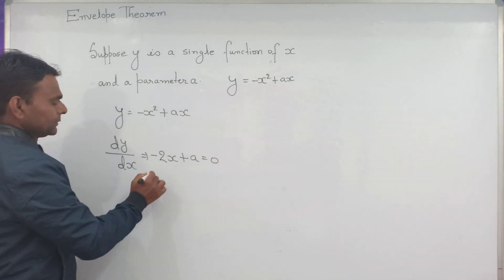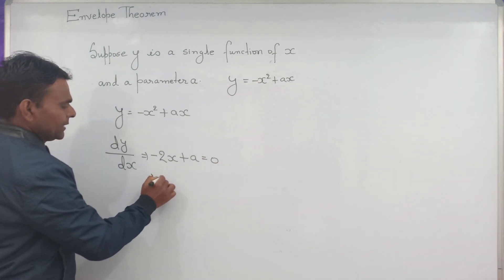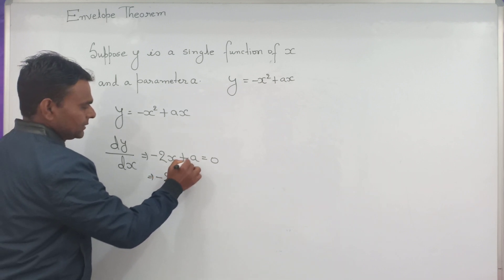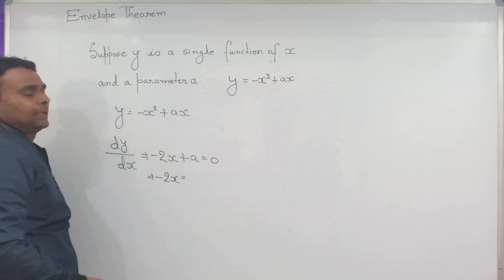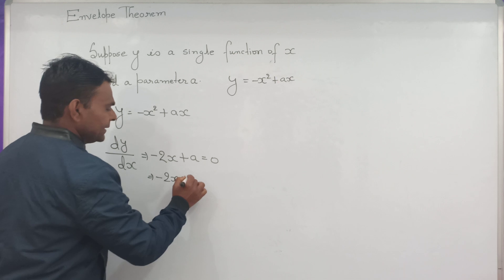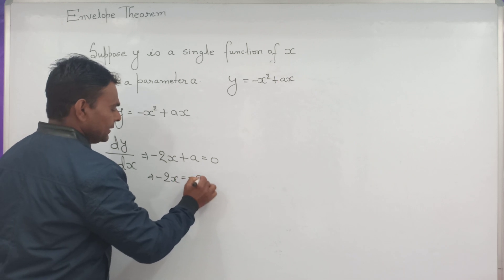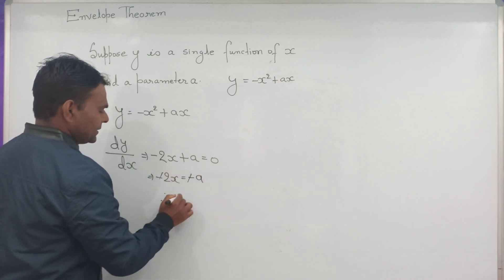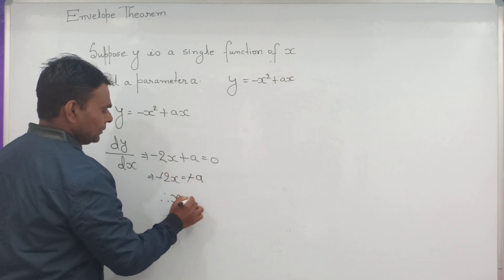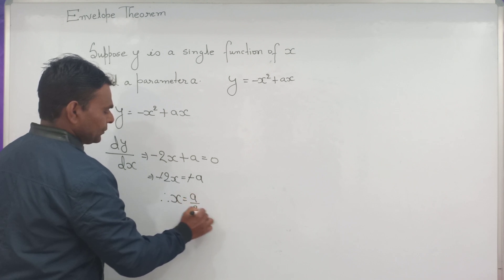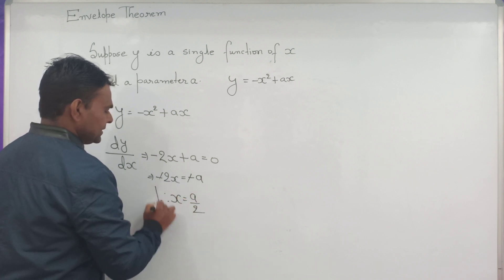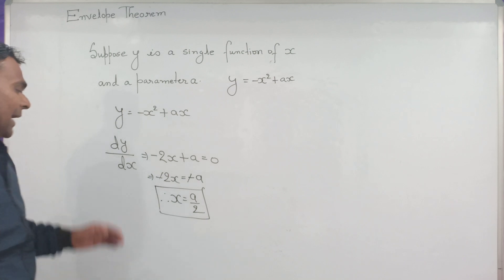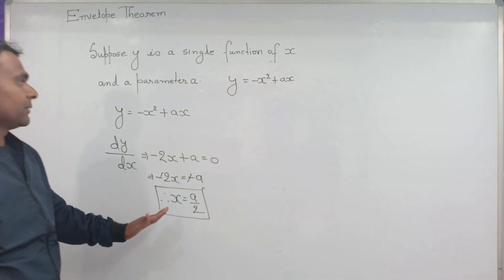Minus 2x, setting a on the RHS side, it becomes minus a. Minus minus cancel, therefore x equals a divided by 2. This is the optimum value we got for x.